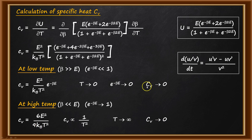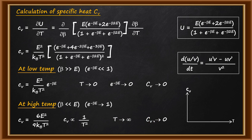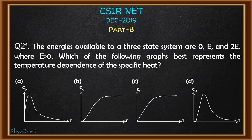Combining all the data: at T = 0, Cv = 0; it increases following an exponential pattern, reaches a maximum, then decreases following a 1/T² form, and tends to 0 again as T → ∞. Plotting this behavior gives a peaked curve. Matching this with the given options, option D matches our result — so the correct answer for this question is option D.